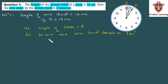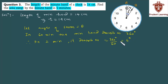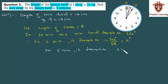To one minute mein kitna angle describe karega? 360 upon 60. Therefore, in one minute it describes an angle of 360/60, which is equal to 6 degrees. To five minutes mein kitna angle describe karega? 6 into 5, which is equal to 30 degrees. Therefore, in five minutes — kyunki question mein five minute ka interval given hai — it describes an angle of 5 × 6 = 30 degrees.